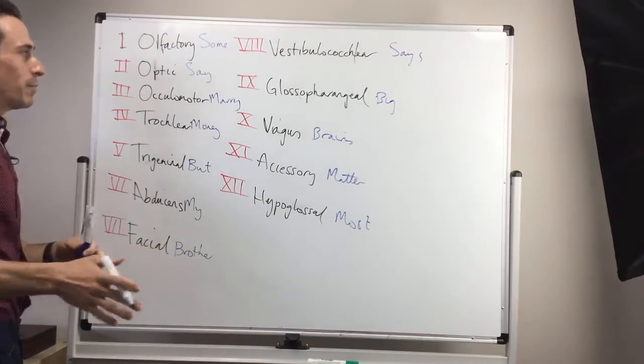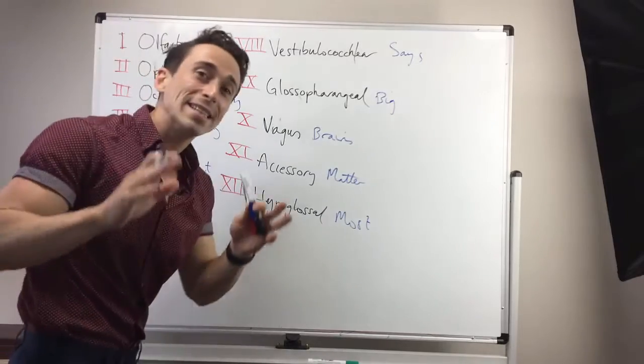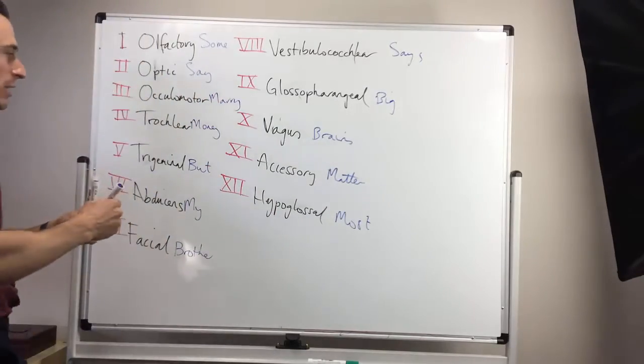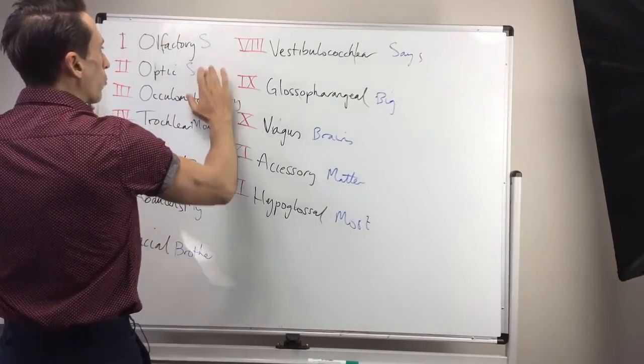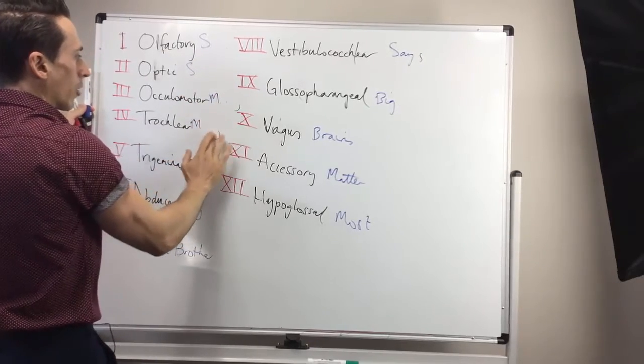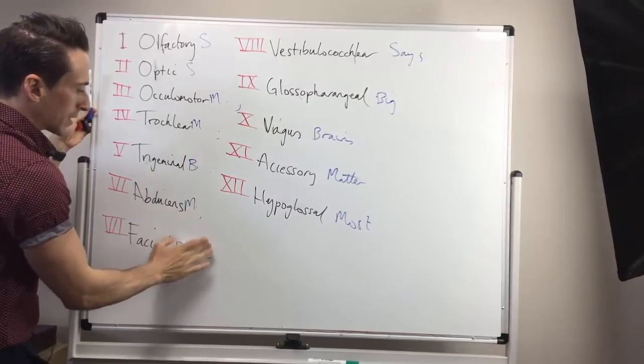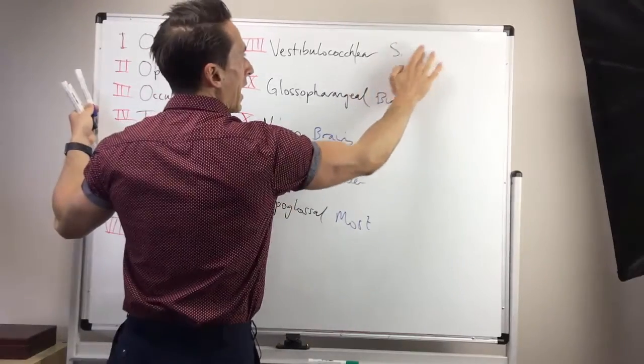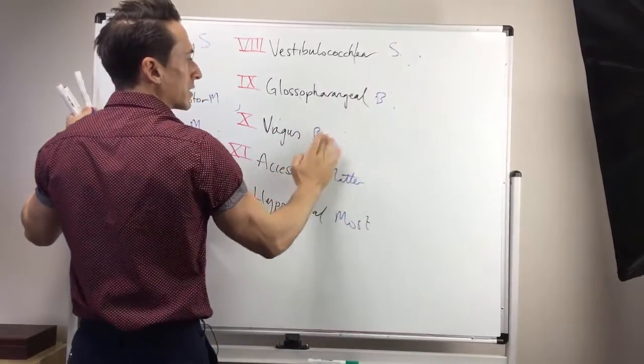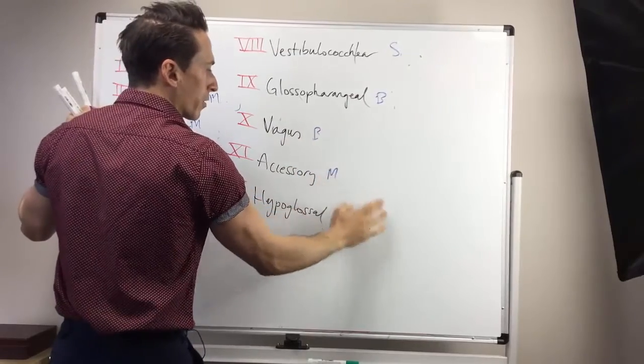Some say marry money but my brother says big brains matter most. And again, just like we were doing before, you can get rid of the rest of the word and here we go. If it starts with an S, we know it's going to be sensory. If it starts with an M, it's going to be motor. And if it starts with a B, it's going to be both sensory and motor.